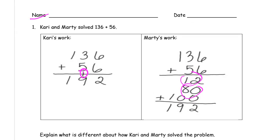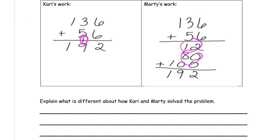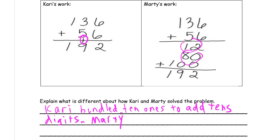Let's say that Carrie bundled ten ones to add to the tens digit.